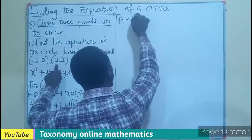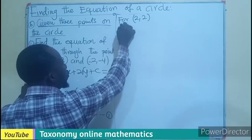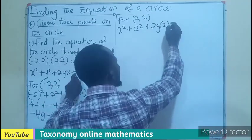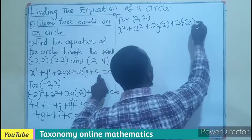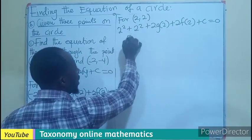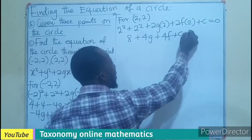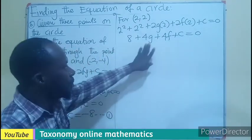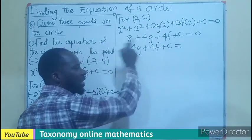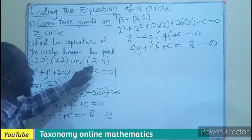For the point (2, 2), substituting into our original equation we have 2² plus 2² plus 2g(2) plus 2f(2) plus c equals zero. That gives 4 plus 4 plus 4g plus 4f plus c equals zero. Maintaining the unknown quantities and subtracting 8 from both sides gives 4g plus 4f plus c equals negative 8. This is Equation 2.